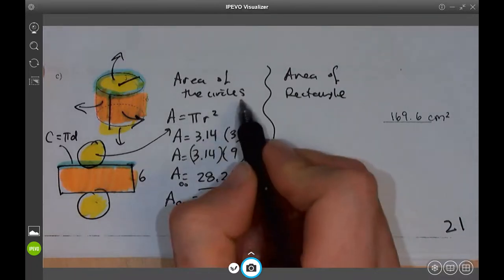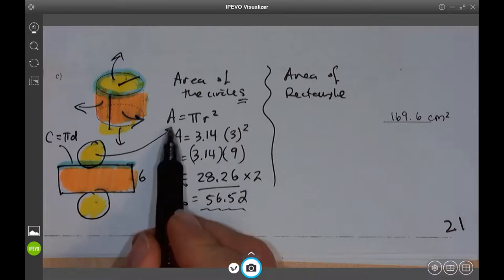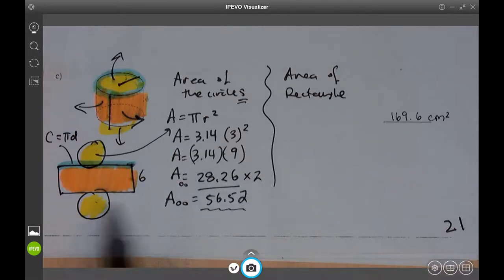This is the area of the circles now. Both circles together. Right? Because there are two circles. This was one circle. And now we have two circles. That is the area of those two circles.